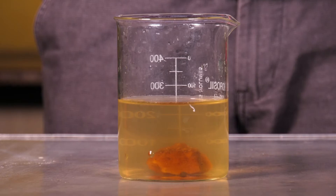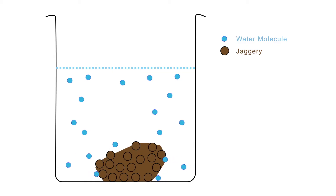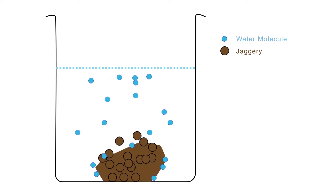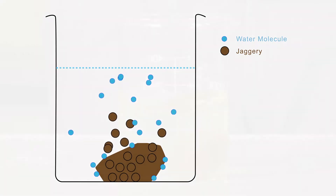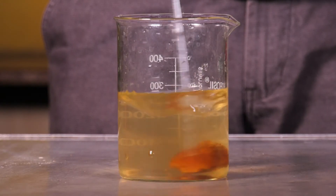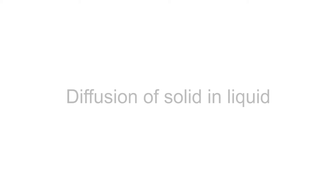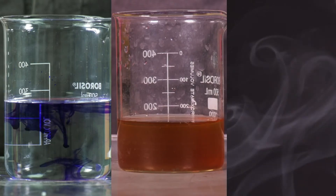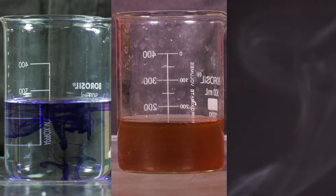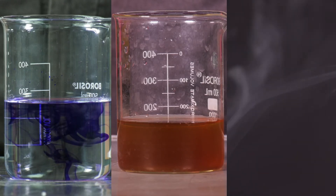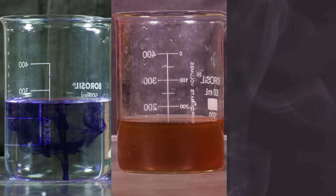This process is called diffusion. In the case of jaggery, the surface molecules are loosened from the lump by the collision with the water molecules. A little bit of stirring helps these molecules to spread out in the water. This is also diffusion — diffusion of a solid in a liquid. Smoke spreading out in the room is an example of a gas diffusing with another gas, that is air. So, diffusion can take place between two liquids, between a solid and a liquid, and between two gases.